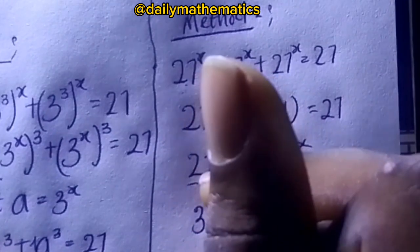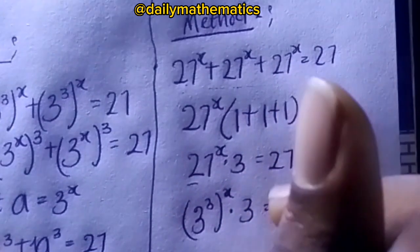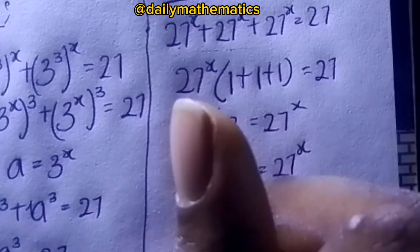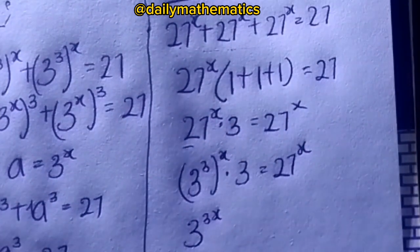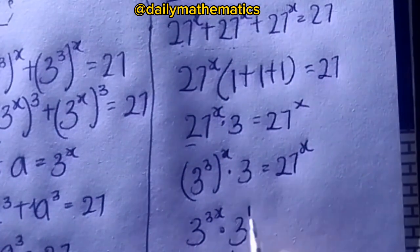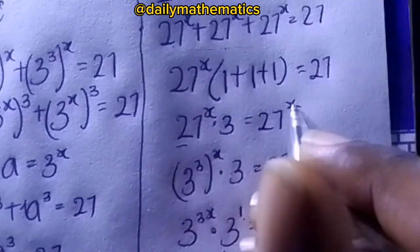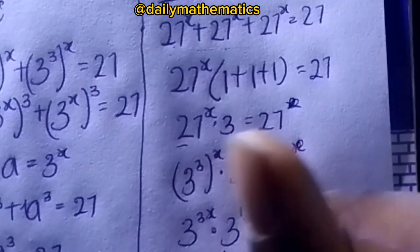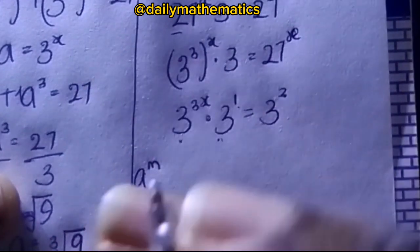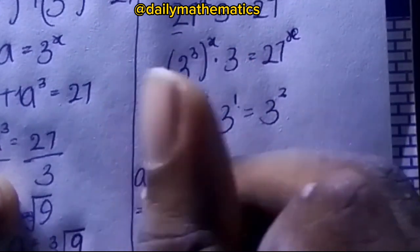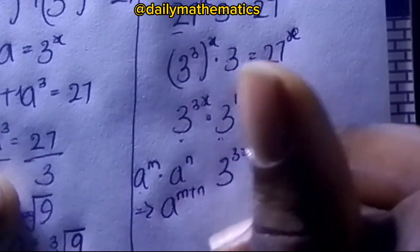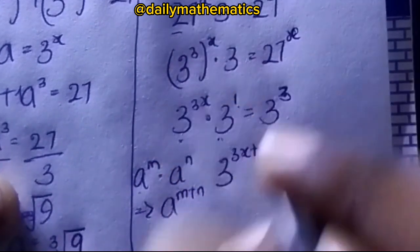Since 27 = 3³, we write 3³ raised to the power of x, multiplied by 3 equals 27. Using the law (a^m)^n = a^(mn), we get 3^(3x) times 3^1 equals 27. Then applying a^m times a^n = a^(m+n), the left side becomes 3 raised to the power of (3x + 1). And since 27 = 3³, the right side is 3³.